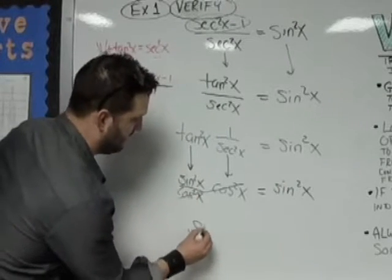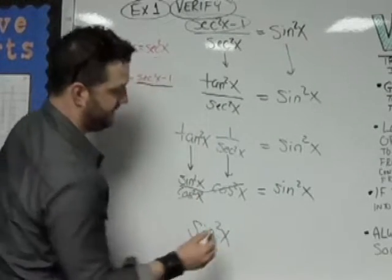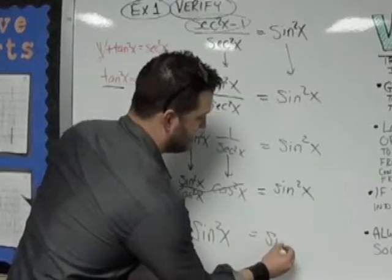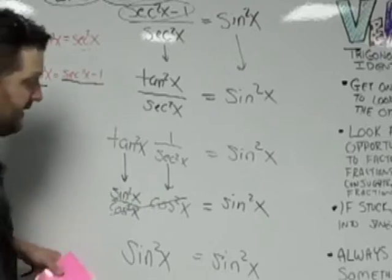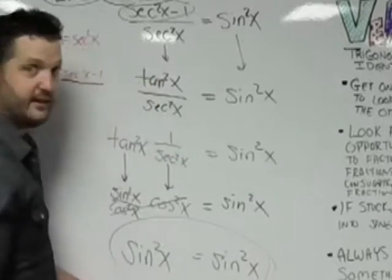We've got sine squared x on the left side equals sine squared x on the right side. And that's the end of it. You've verified it. So there it is. Done.